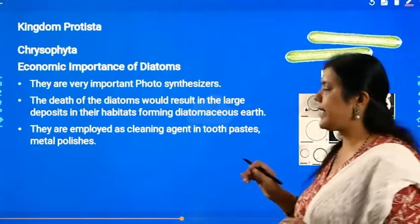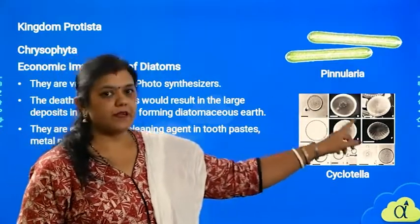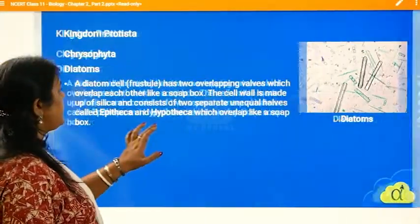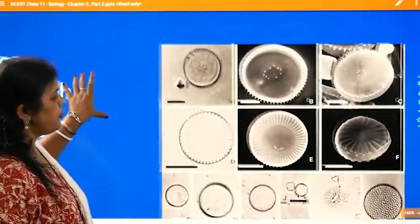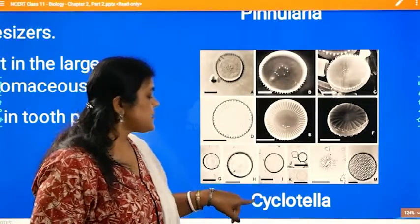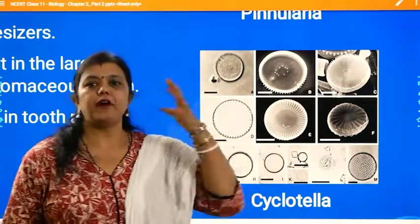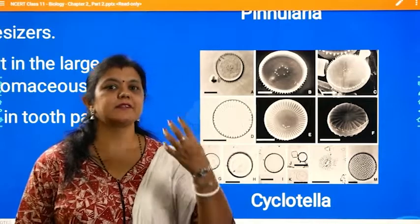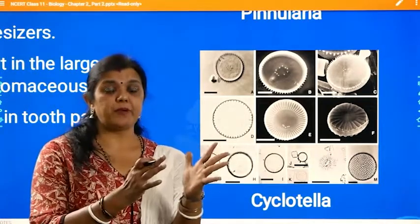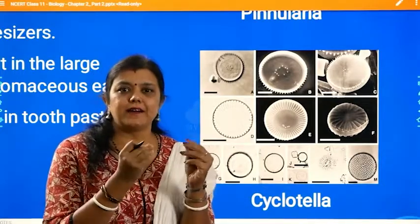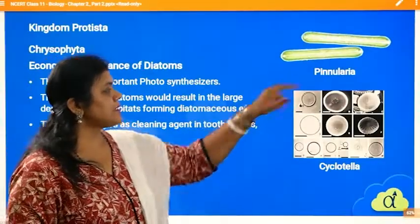So there is a lot of influence of diatoms. There is a picture of Pinularia and this one is called Cyclotella. If you observe the typical pattern seen in diatoms, you will find they have a typical cell wall arrangement. These cell wall arrangements are very hard and basically help them to be used as metal polishes or in toothpaste because they are rough in appearance. When we rub with them, that little rough feeling is very beneficial for use as a cleaning agent.